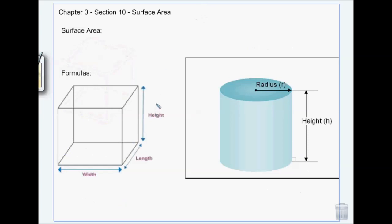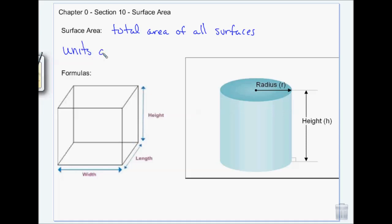Surface area is the total area of all surfaces. For a rectangular prism, it's the area of the back, front, sides, top, and bottom all added together. Since it's area, the units are squared. The formula is: two times the length times the width, plus two times the length times the height, plus two times the width times the height.